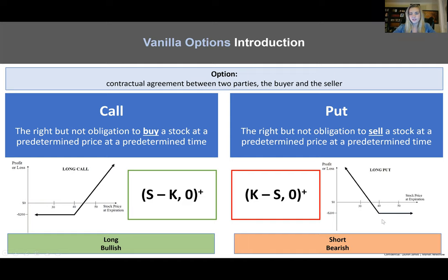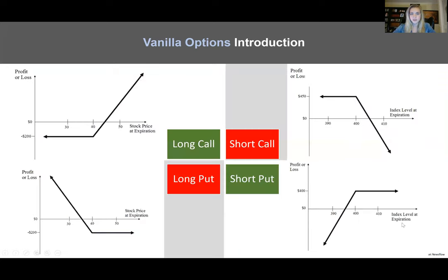Think of options like insurance in the sense that you do have this downside protection on both sides. There are four things you can do with vanilla options. On the top left, you see a long call — you are buying a call. You can also sell a call. Selling a call is not the same as being long a put. If we look at these two graphs, they are not the same, they are not reflections of each other. The difference between a long call and a short call is just a reflection over the x-axis, so whatever happens to the long holder, the inverse happens to the short holder.